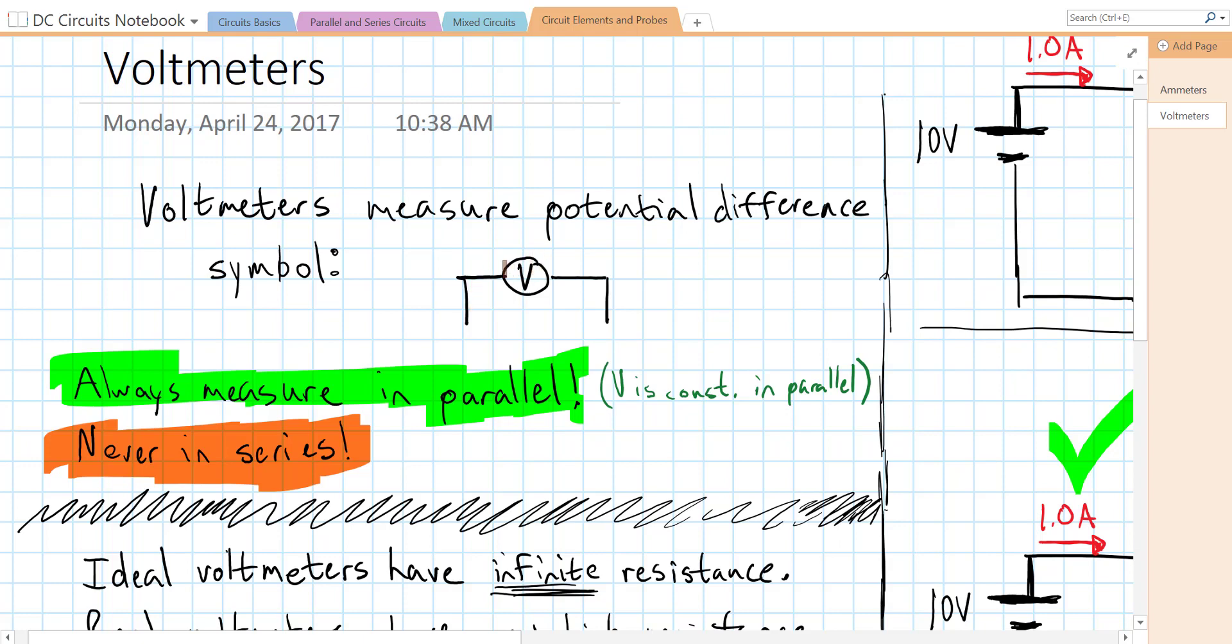The symbol for a voltmeter is a circle with a V in the middle, and it has two terminals or two leads coming from it, positive and negative. Red is generally positive, and black is generally negative.